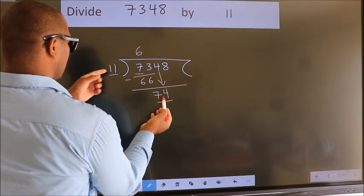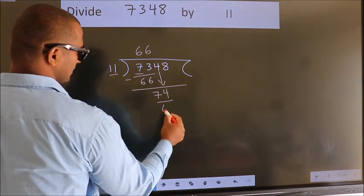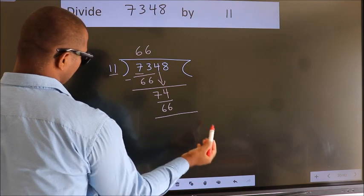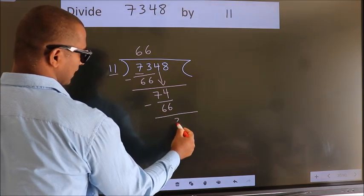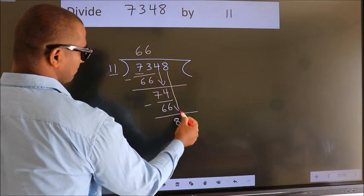A number close to 74 in the 11 table is 11 times 6, which equals 66. Now we subtract. We get 8. After this, bring down the beside number.